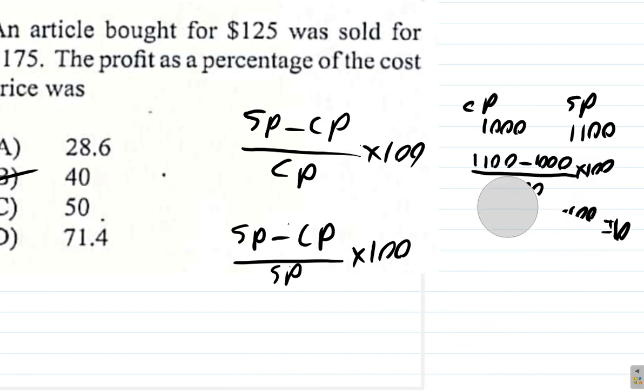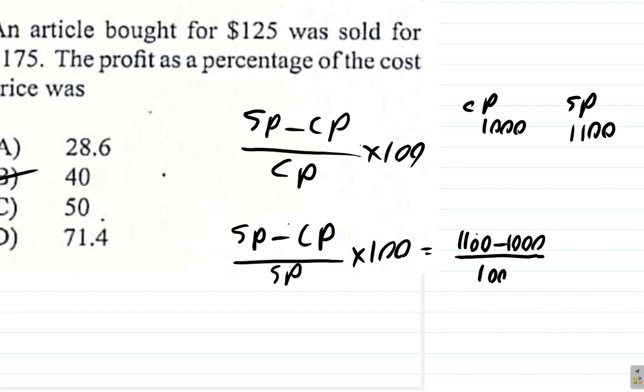Now, if you should try the second formula, what you get is $1100 minus $1000, selling price minus cost price, over selling price times 100. What you get is $100 over $1100 times 100. My mistake, I should put this as selling price.